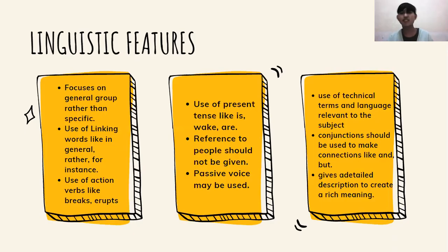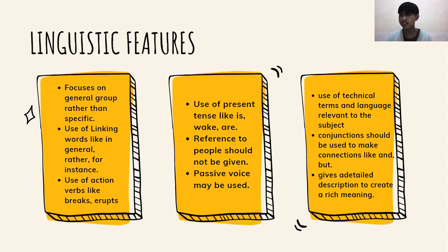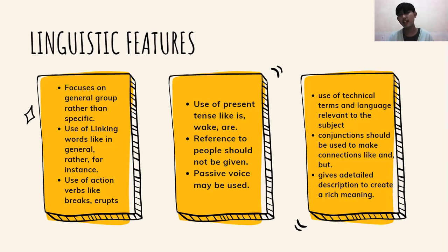Now we move to linguistic features. As you know, explanation text has linguistic features — maybe there are nine. The first is it focuses on a general group rather than specific. Second is the use of linking words like 'generally,' 'rather,' or 'instead.' The next is the use of action verbs like 'breaks,' 'erupts,' or 'breaks down.' You can use action verbs — walk, feel, fall, or any action verb. And then, use of present tense like 'wait' or 'is.' I'm not going to explain present tense in detail.